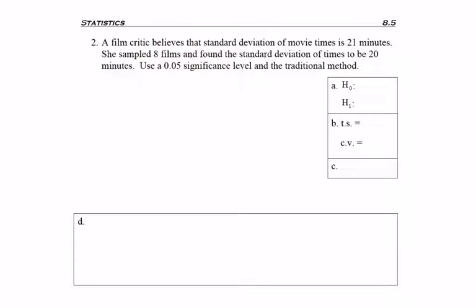Problem number two. A film critic believes that the standard deviation of movie times is 21 minutes. She sampled eight films and found the standard deviation of times to be 20 minutes. Use a .05 significance level and the traditional method.